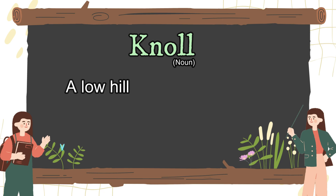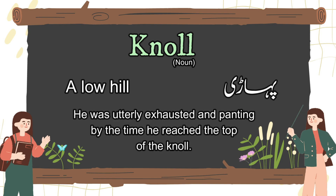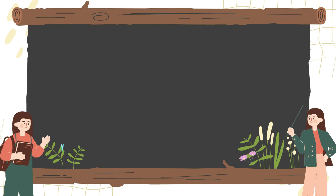Our third word is knoll. This is a noun. Its English meaning is a low hill. If we see its Urdu meaning, that is pahaari — not too high. Let's use this word in a sentence: he was utterly exhausted and panting by the time he reached the top of the knoll.